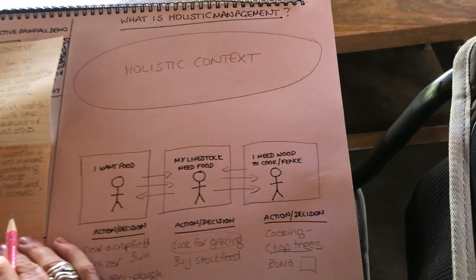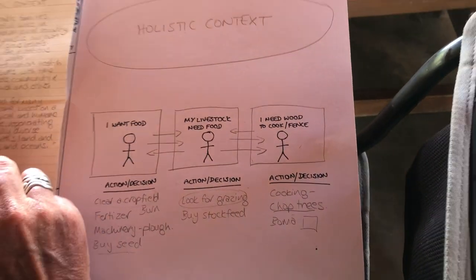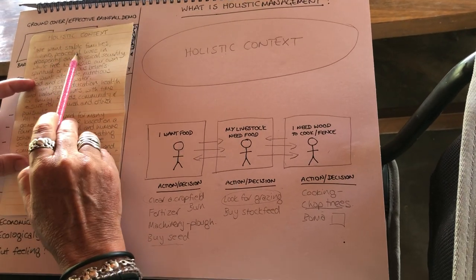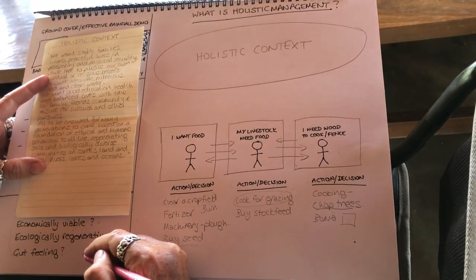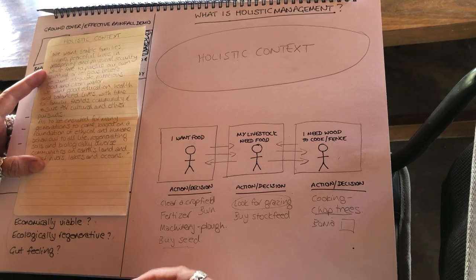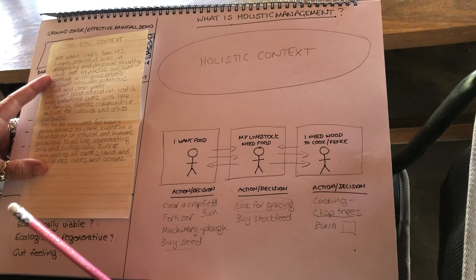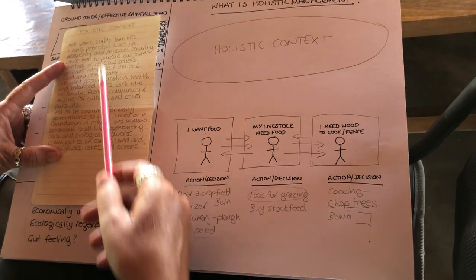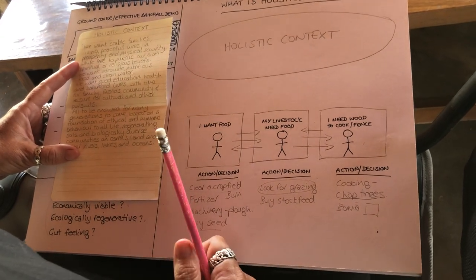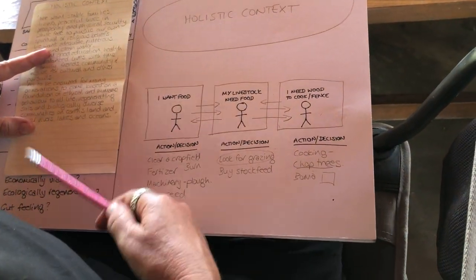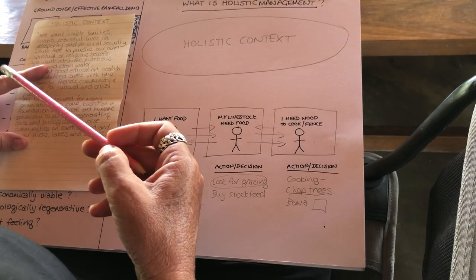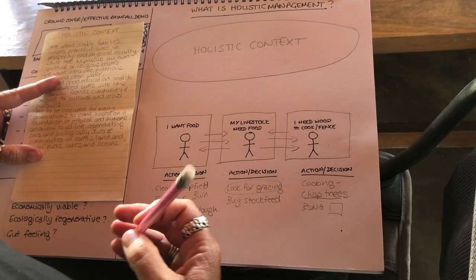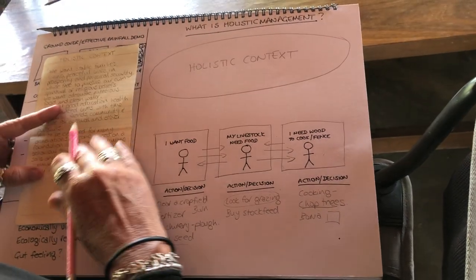I think this is a context everybody can get on board with, because nobody wants unstable families living violent lives in poverty with no physical security. Nobody wants bad food, dirty water, no education or health. All humans can relate to this — it's what we all strive for. It's why we manage: to improve our lives and the lives of others or animals. And it's not going very well globally at the moment.